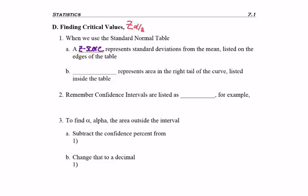Also, what we're going to be interested in is finding alpha. That's the Greek lowercase letter for A. Don't forget it's going to represent area. Most specifically, it's in the right tail of the curve, and area is always listed inside or in the middle of the table.